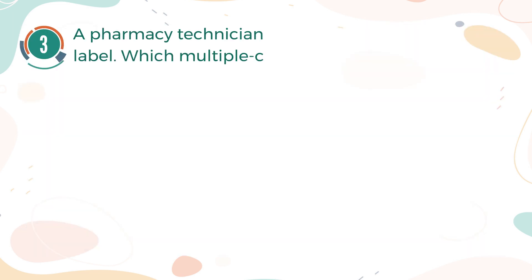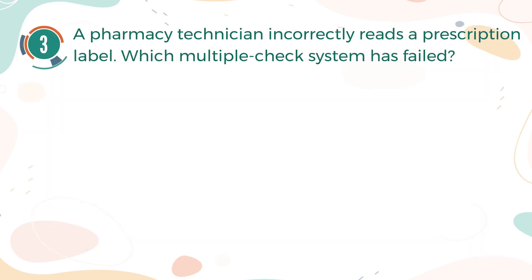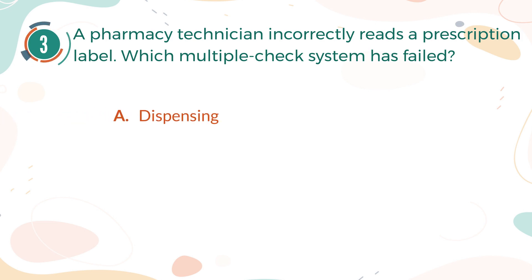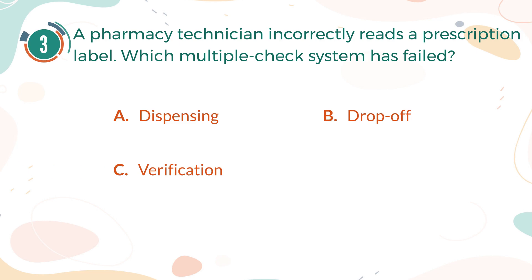Number 3. A pharmacy technician incorrectly reads a prescription label. Which multiple check system has failed? A. Dispensing. B. Drop-off. C. Verification. D. Data entry.